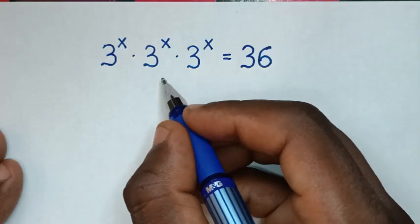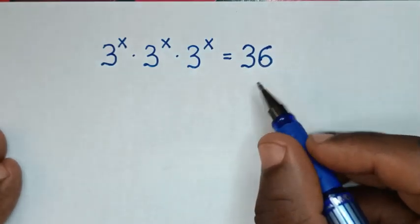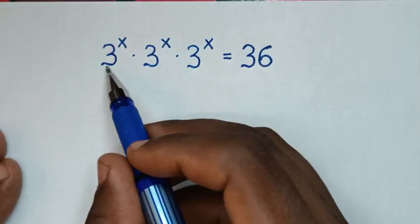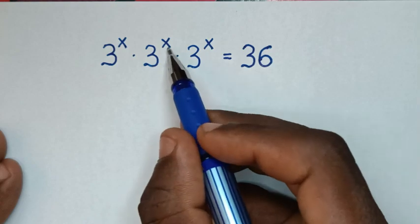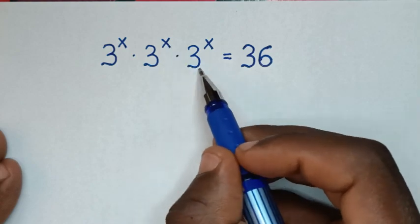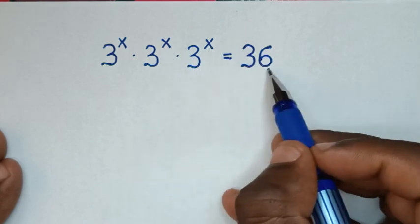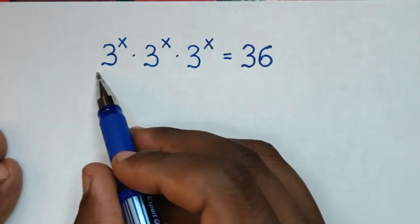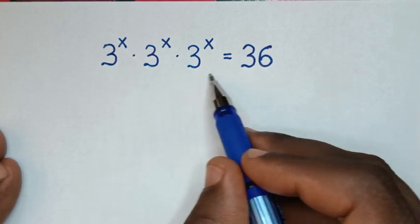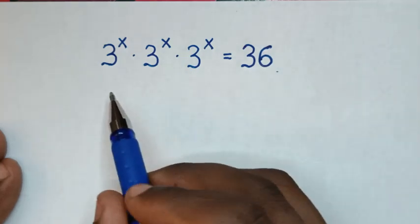Hello, you are welcome to solve this math problem which is 3 power of x times 3 power of x times 3 power of x is equal to 36. We need to find the value of x from this equation.